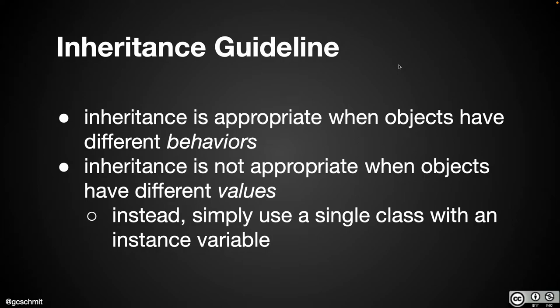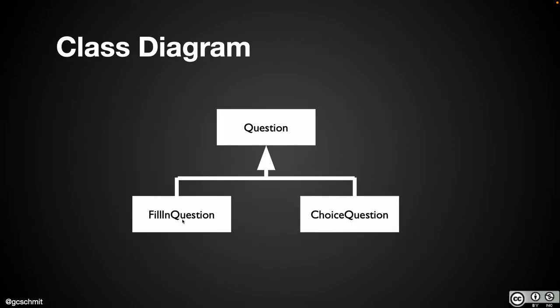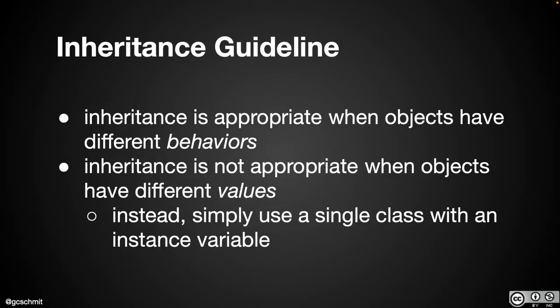When we learn about something new and exciting, we want to use it everywhere — and that's a pitfall to watch out for. Inheritance is our shiny new thing, but most of the time we don't need it; we got through this whole year without it. Here are some guidelines: inheritance is appropriate when objects have fundamentally different behaviors. A FillInQuestion with a blank behaves differently than a multiple choice question with choices A, B, C, D — those are fundamentally different behaviors, so inheritance is a good fit. Inheritance is not appropriate when objects simply have different values.